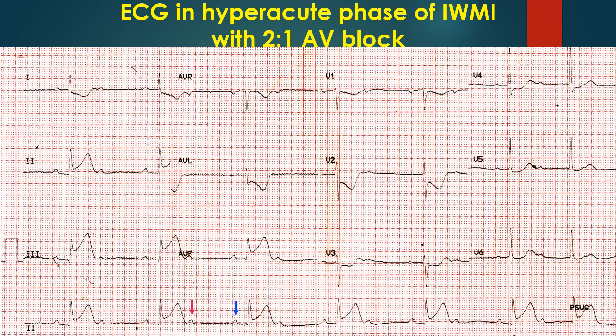ECG in the hyperacute phase of inferior wall myocardial infarction with 2:1 AV block shows two P waves for each QRS complex, indicating 2:1 AV conduction. Upsloping ST segment elevation is seen in leads II, III and AVF — the inferior leads — with T waves in these leads tall compared to the amplitude of QRS complexes. ST segment depression is seen in leads I, AVL, and V1 to V6. ST depression in I, AVL, V1 and V2 are downsloping, while those in V3 to V6 are horizontal. T inversion is noted in V1 and V2.